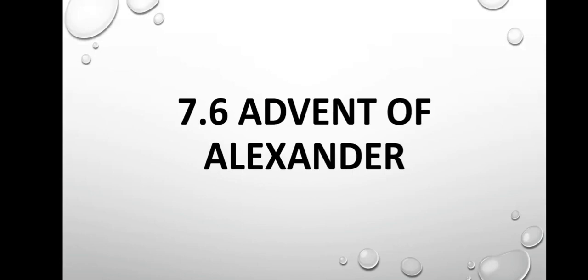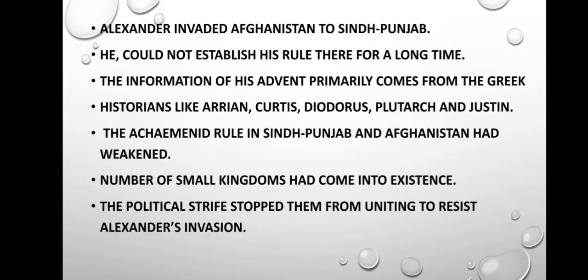Point Six, the last point of this chapter: the Advent of Alexander. Alexander invaded the Indian subcontinent and conquered several kingdoms from Afghanistan to Sindh and Punjab. However, he could not establish his rule there for a long time. Information about his advent comes from historians like Arrian, Diodorus, Plutarch, and Justin. At the time of Alexander's advent, Achaemenid rule in Sindh, Punjab, and Afghanistan had weakened, and a number of small kingdoms had come into existence. Political conflict stopped them from uniting to resist Alexander's invasions.